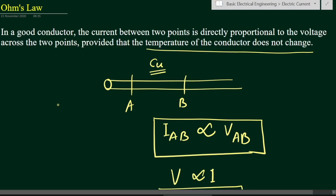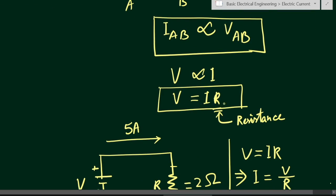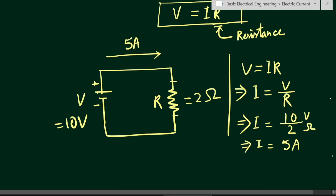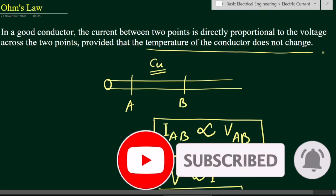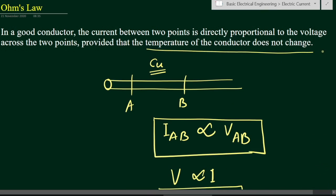Ohm's Law is applicable to conductors that have free electrons to take part in conduction. These free electrons will move when we apply a potential difference, and the amount of current is directly proportional to the applied voltage. This proportionality is removed with the constant R — the resistance — which is the property of the material that opposes the flow of electrons. We will see about resistance and resistivity in the next tutorial. If you feel benefited from this video, please like, share, and subscribe.